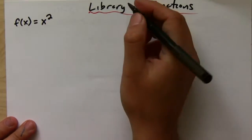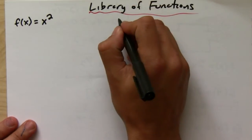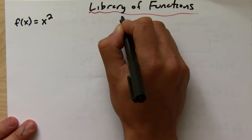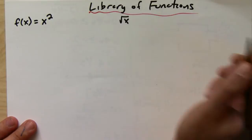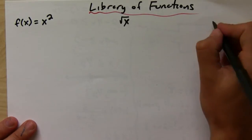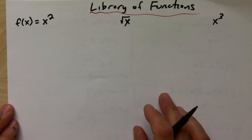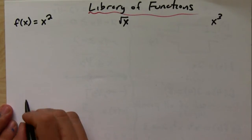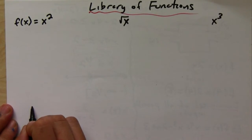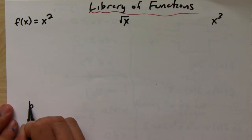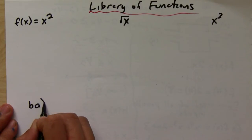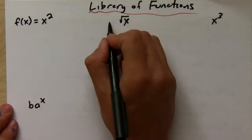X squared — you should know what the graph looks like. Square root of X — you should know what the graph looks like. X cubed. You should also know what the exponential function looks like.